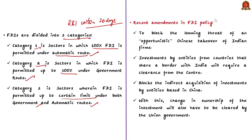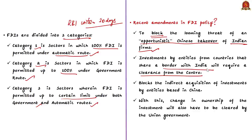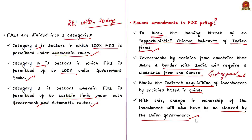The recent amendment to the FDI policy was made to block the looming threat of opportunistic Chinese takeover of Indian firms. The amendment states that investments by entities from countries that share a border with India will require clearance from the central government — that means all FDIs from border-sharing countries must come through the government approval route only. In addition, the new policy also blocks indirect acquisition of investments by entities based in China, meaning any change in ownership of investments will also need to be cleared by the union government.